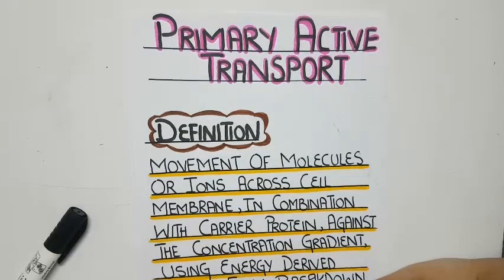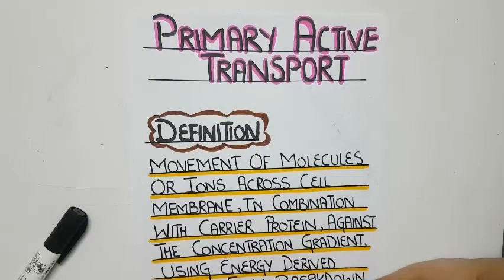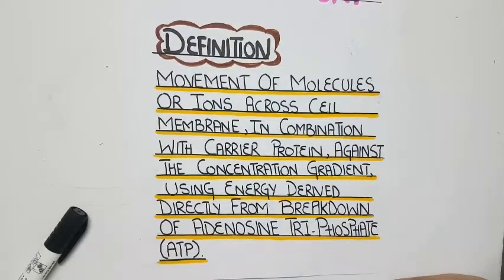Primary active transport is defined as the movement of molecules and ions across the cell membrane in combination with carrier proteins, against the concentration gradient, using energy derived directly from the breakdown of adenosine triphosphate, or ATP.